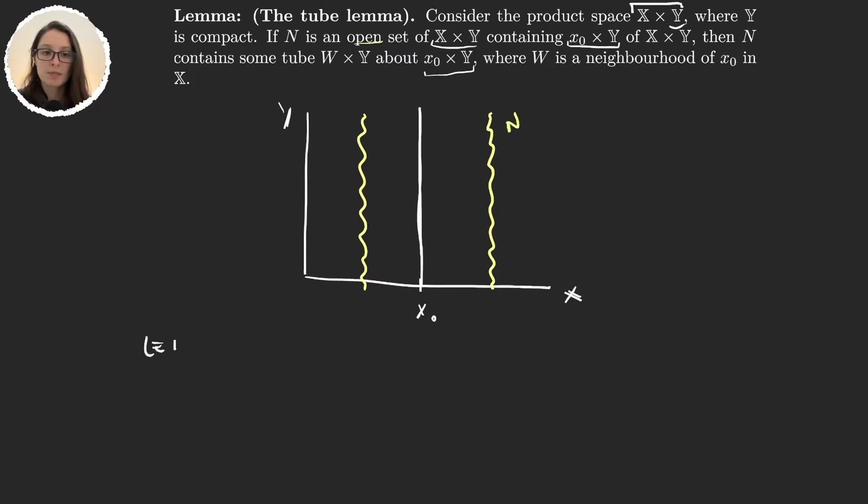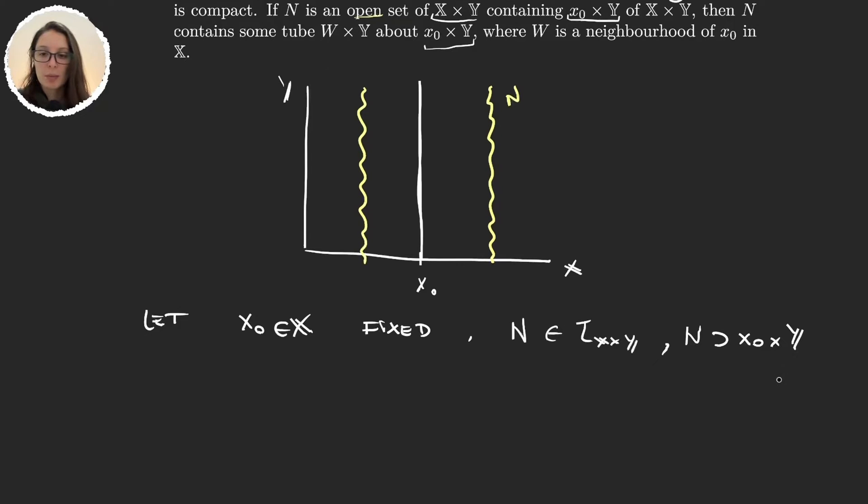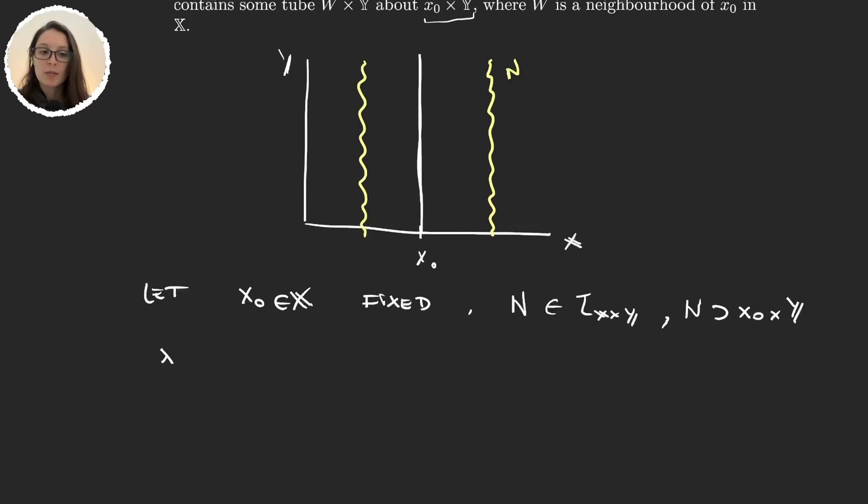We said that we took some element x₀ in X fixed and an open set in the product topology N that contains x₀ times Y. Now let's think about x₀ times Y. This set, it's very easy to prove that it's homeomorphic to the set Y. I'm not going to prove this but if you want you can do it yourself. All you have to do is find a function that is a homeomorphism between these two spaces.